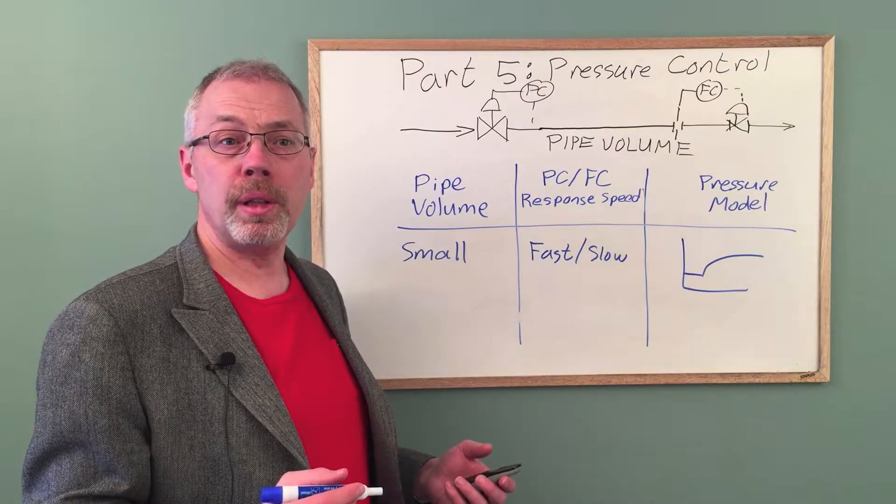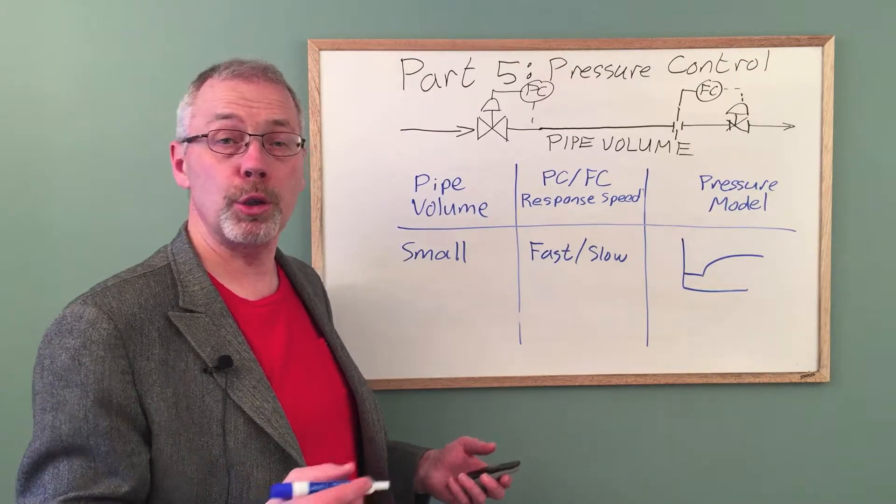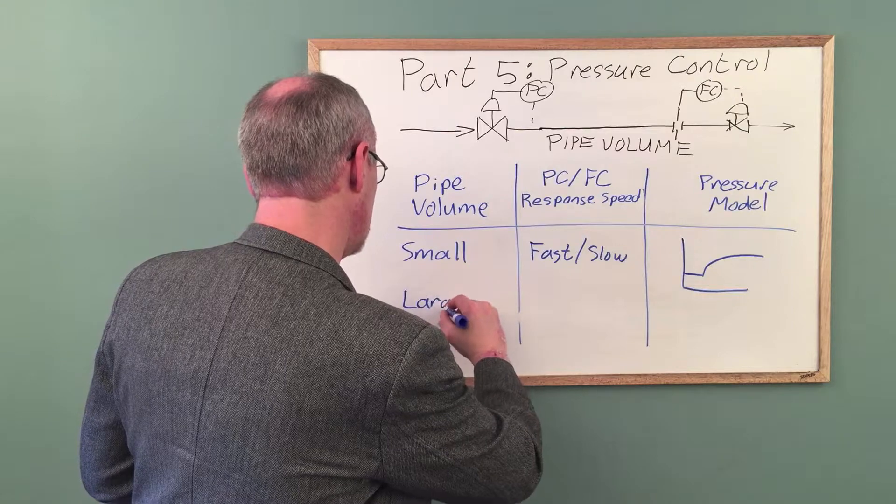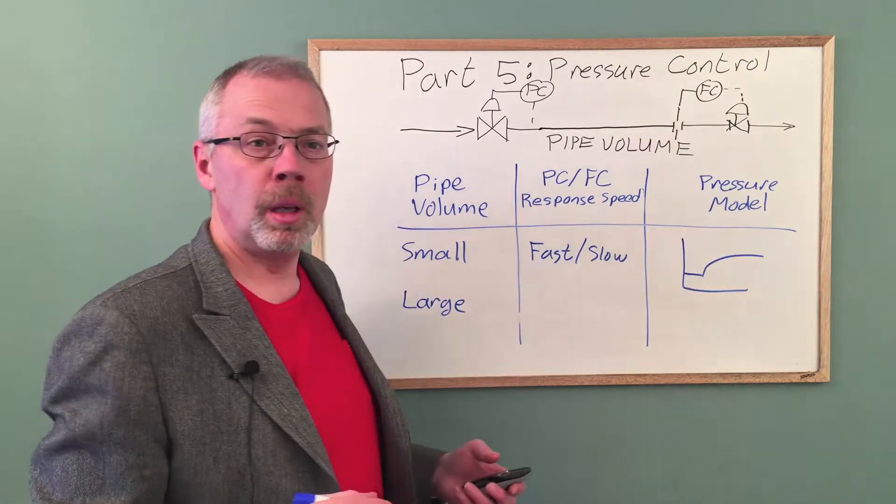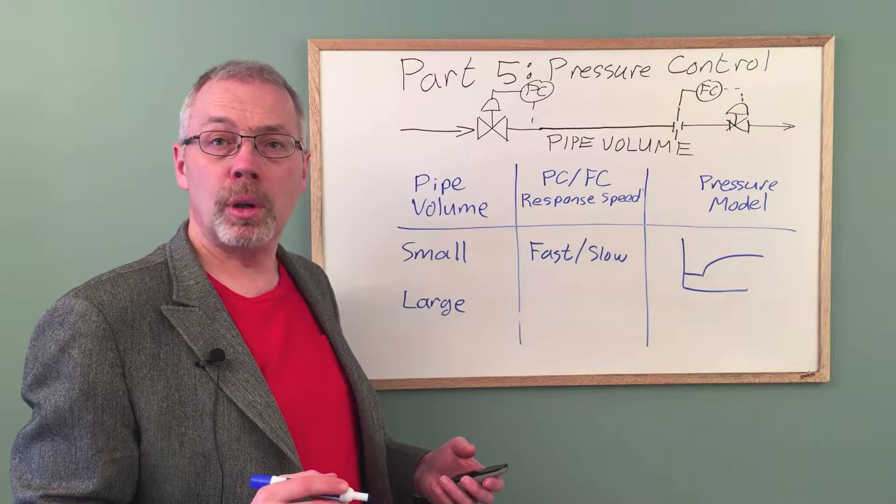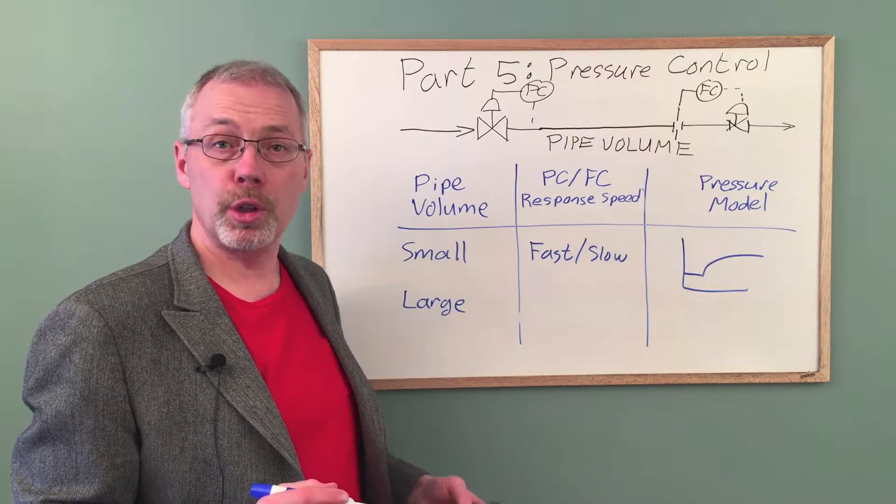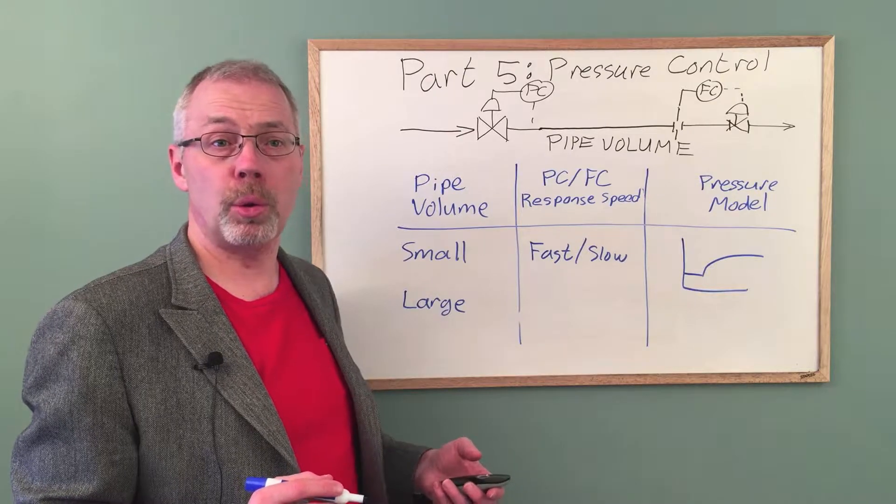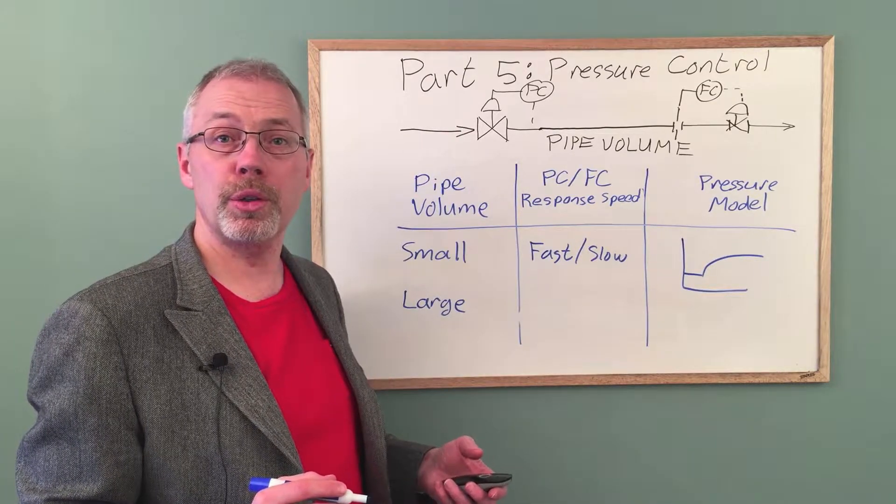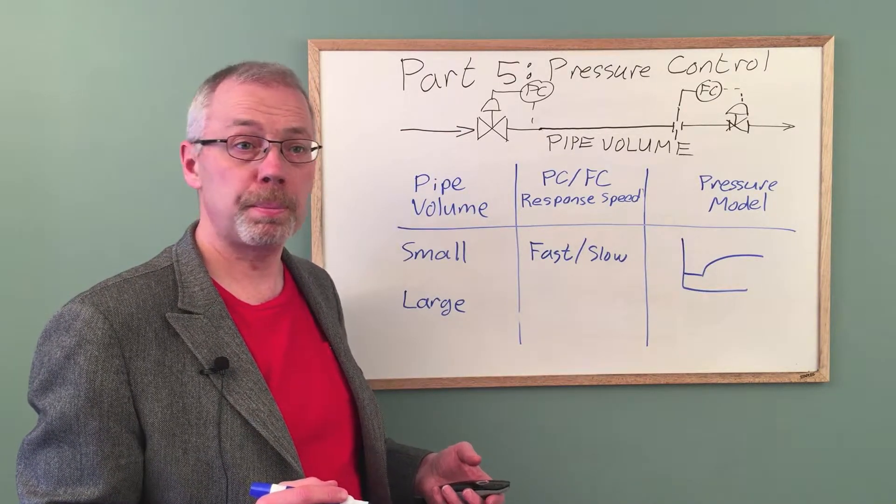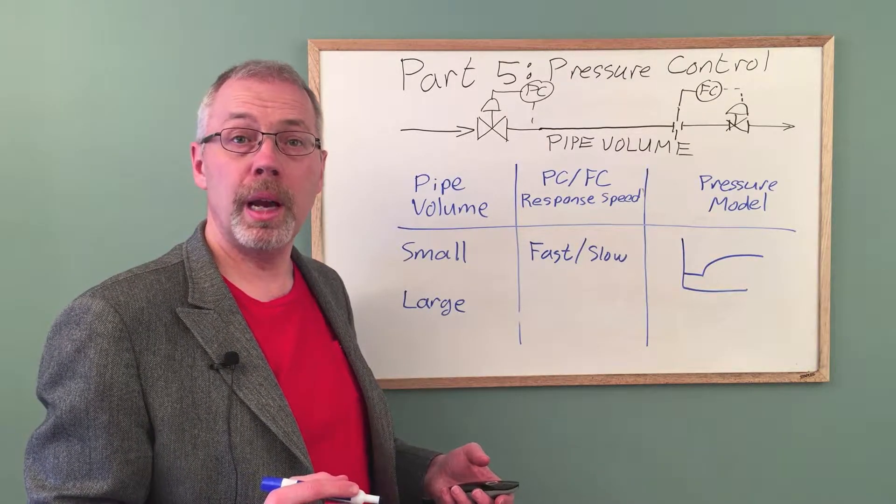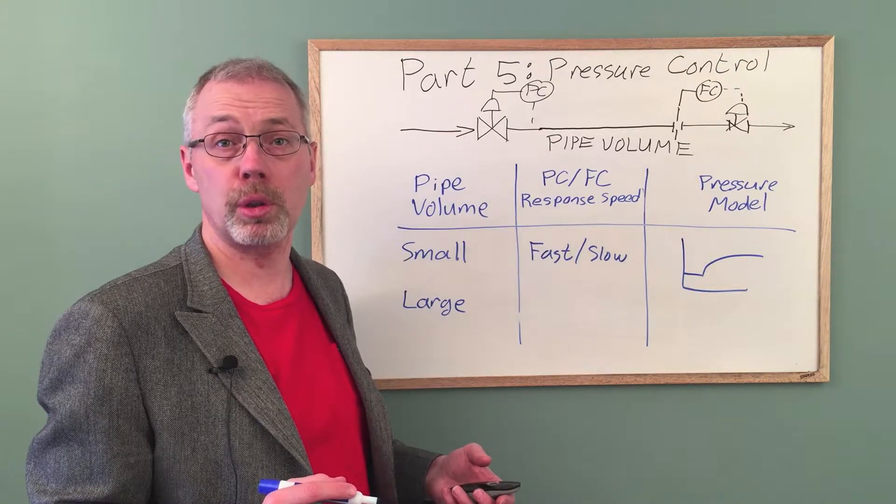Now let's consider the case where the pipe volume is quite large. This is still an interacting system but the large pipe volume provides some surge capacity. In this case, the flow controller is more important to ensure steady firing of the equipment. Flow must be tuned to respond quickly and the pressure controller will be tuned to respond somewhat slower.